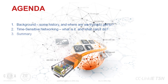Let's start out by looking at the agenda for today. I'm going to start with some background — some history about how industrial networks have developed over the past few years — and then we'll take a look at what the current situation is and where we're trying to get to. Then we'll follow that with an overview of what time-sensitive networking is and what it can do, and then we'll finish with a summary.